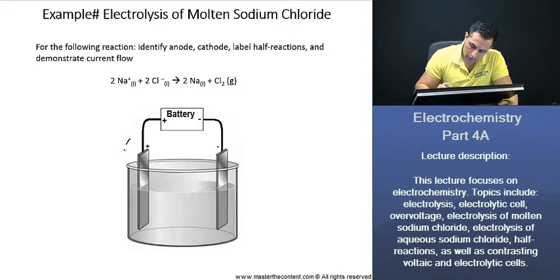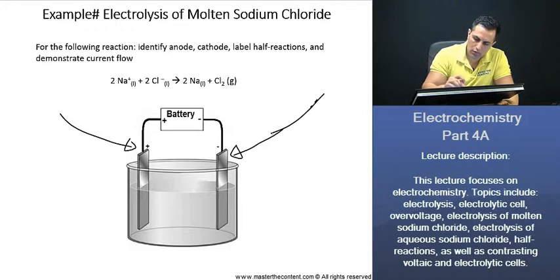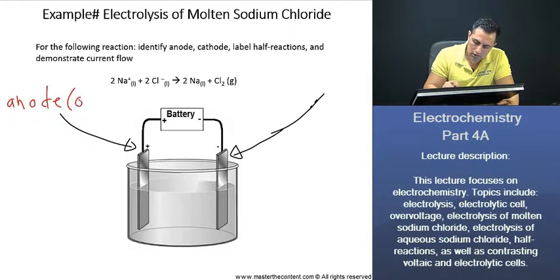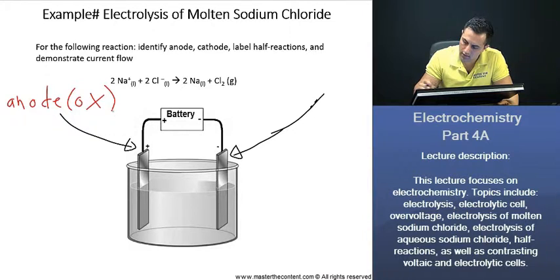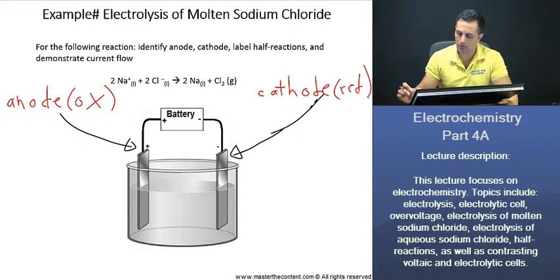Let's go ahead and label our anode and our cathode first. The anode is going to be the electrode with the positive sign, and that's where oxidation always happens at the anode. And then the cathode is going to be where reduction always takes place, and that's going to be at the negative electrode.